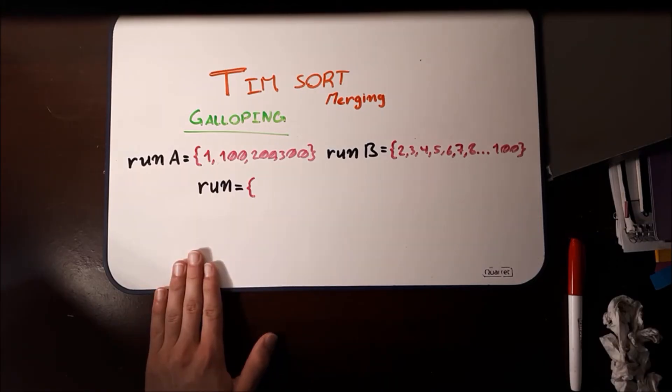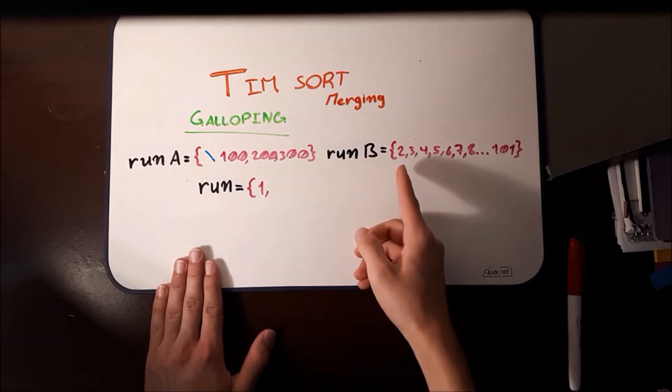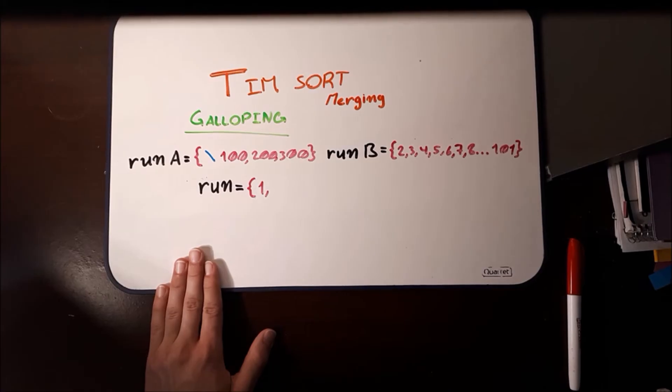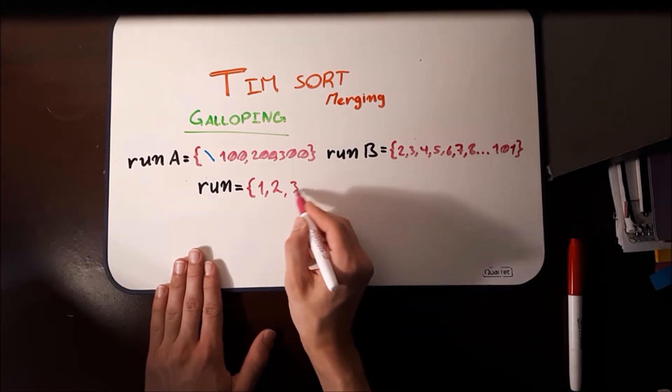In the new run, we put element 1 because it's less than the first element, 2, here. Then it checks if 2 is in between 1 and 100. It is. So it puts 2. Same thing for 3, 4, all the way up to 8.